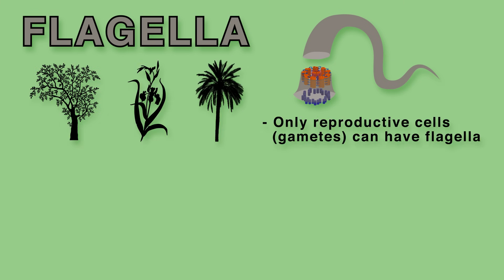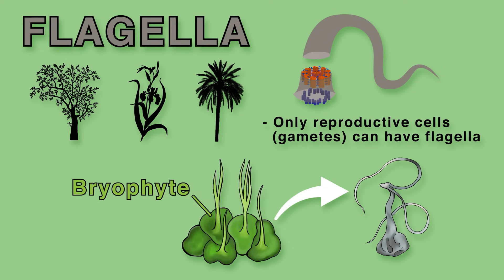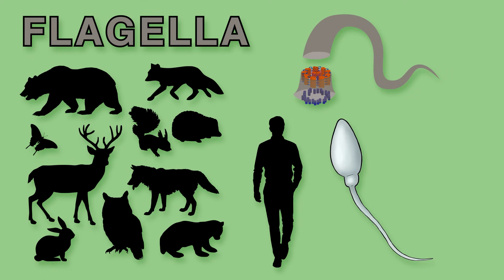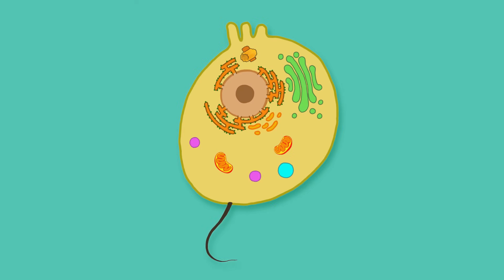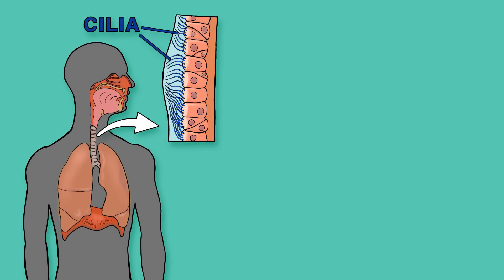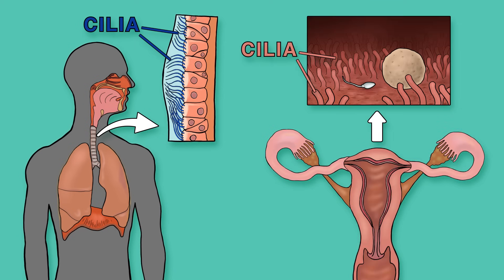In plants, only reproductive cells known as gametes can have flagella, such as the sperm of bryophytes. Some animal cells also have flagella. In humans, sperm are the only cells with flagella. However, many animal cells have cilia, unlike most plant cells. For example, we have cilia in our respiratory system to help move debris and mucus, in the female reproductive system to help sperm move towards the egg, and elsewhere.